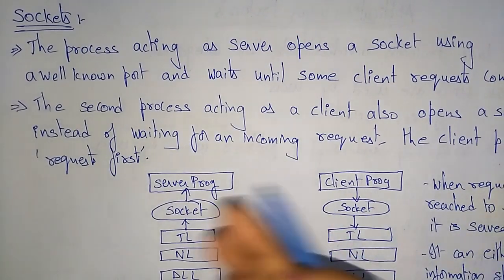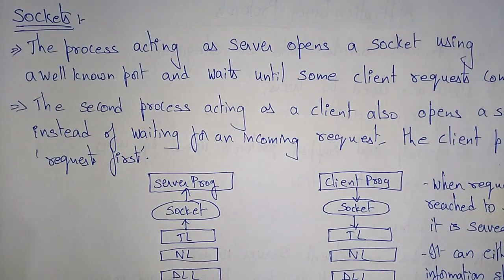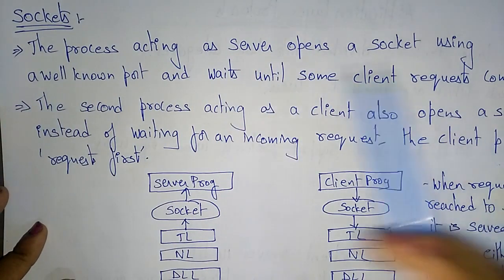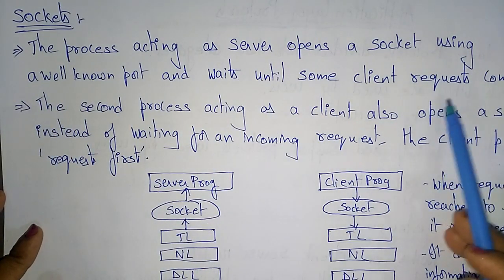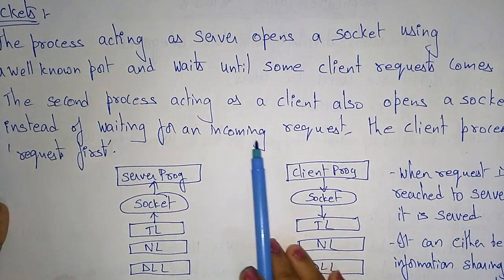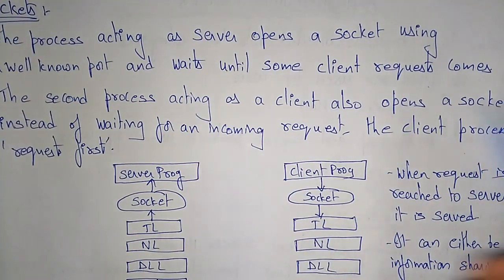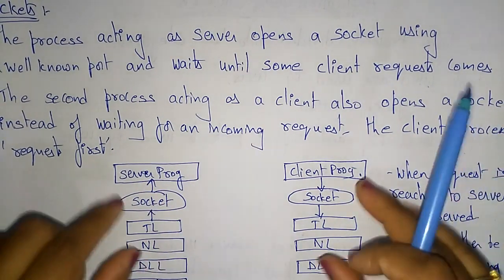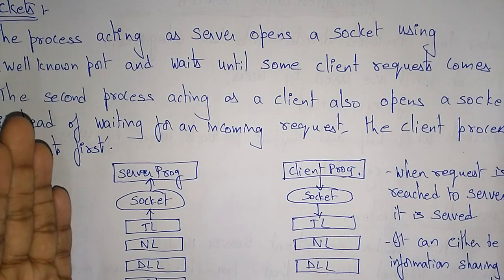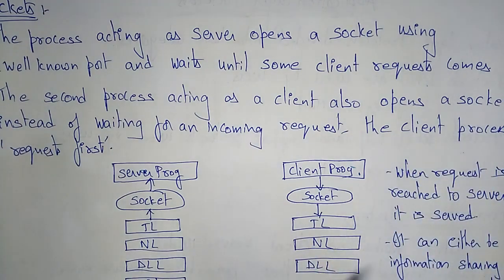A socket is one end of a process used for communication — like a wire cable connecting to a plug point, connecting to your system or mobile phone. The process acting as a server opens a socket using a well-known port and waits until a client request comes. The process acting as a client also opens a socket, but instead of waiting, the client process requests first. Both server and client programs are connected via sockets on each end.